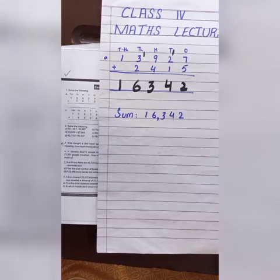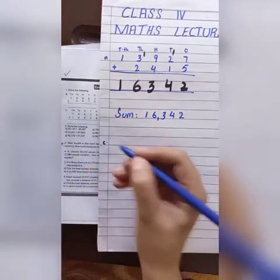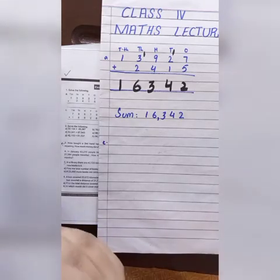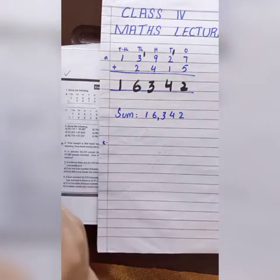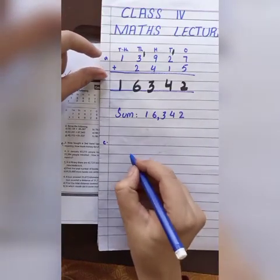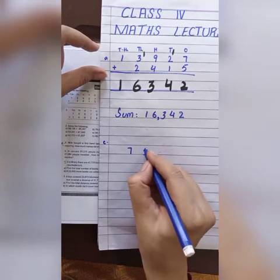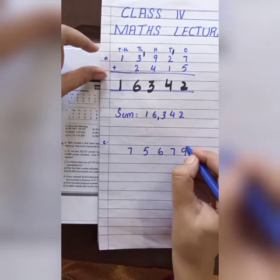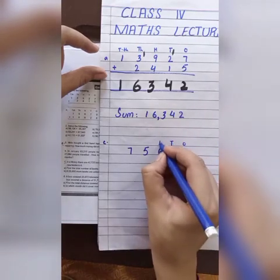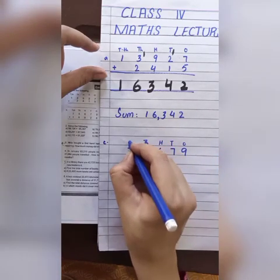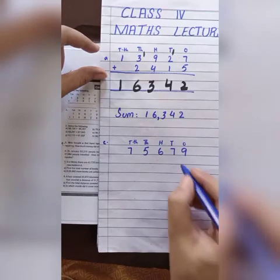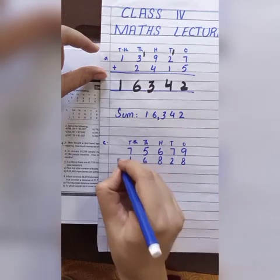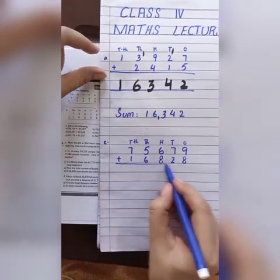Now we will do the next question, part C. Here we have one, two, three, four, five digits in both numbers. We can write down the first one which is 75679. Write down the place values: ones, tens, hundreds, thousands, ten thousands. Now the next one is 82861, and put the plus sign.